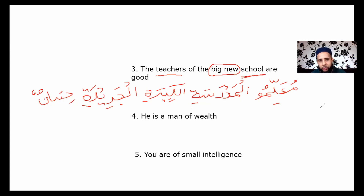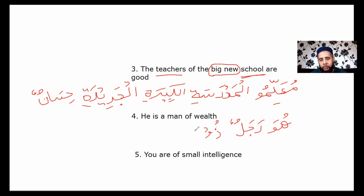Question 4: he is a man of wealth. He is هو, man is رجل, giving هو رجلٌ ذو مالٍ. ذو is used as mudaf and مال is mudaf ilaihi, meaning possessor of wealth — he is wealthy.